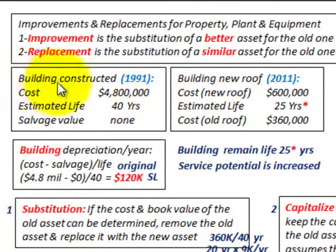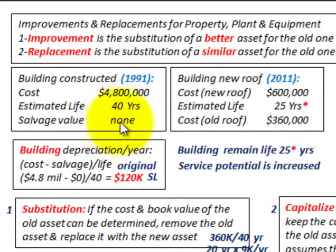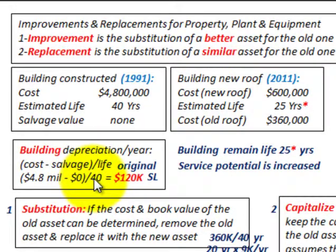Let's look at our example. We have a building constructed in 1991, and then 20 years later in 2011 we're going to replace the old roof with a new roof. For our building constructed in 1991, we have a cost of $4,800,000, an estimated life of 40 years, and a salvage value of zero. The building's depreciation on a straight-line basis is $4.8 million divided by 40 years, giving us $120,000 per year.